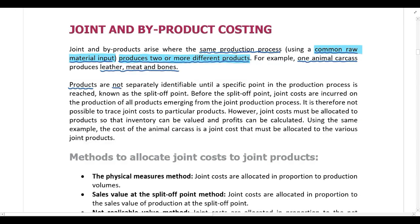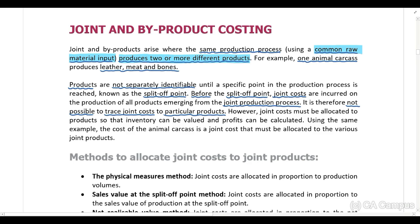Products are not separately identifiable until a specific point in the production process is reached, which is known as the split-off point. Before the split-off point, joint costs are incurred on the production of all products emerging from the joint production process and it is not possible to trace joint costs to particular products. In our example, the cost of the animal carcass is a joint cost and we can't trace it to particular products — we don't know what portion relates to leather, meat or bones. We can't ignore the joint cost because we need to value inventory and calculate profits, so the joint cost must be allocated to products.